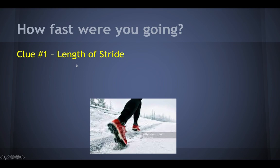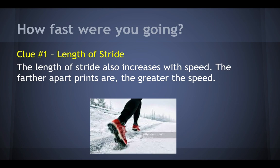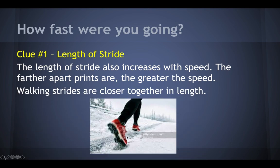So how fast were you going? The number one clue — there are two clues — is the length of the stride. You can see this person's running. The length of the stride increases with speed. So the faster you're going, the more likely you're taking larger strides. That means the farther apart the prints are, the greater the speed. That's a very strong inference we could make. Walking strides are usually closer together in length.